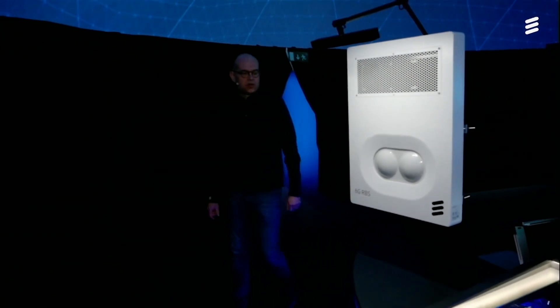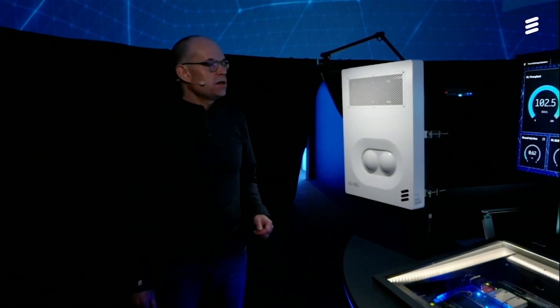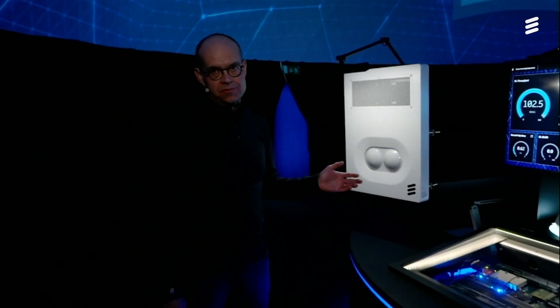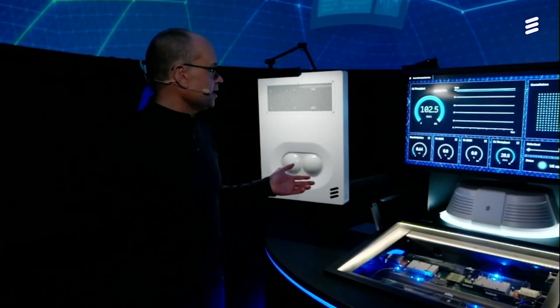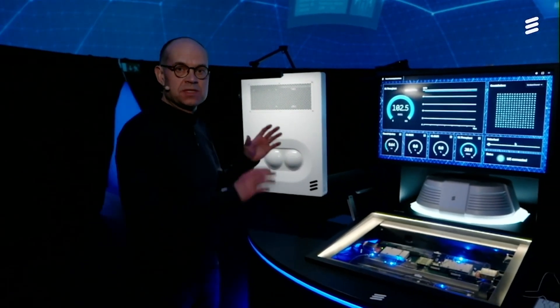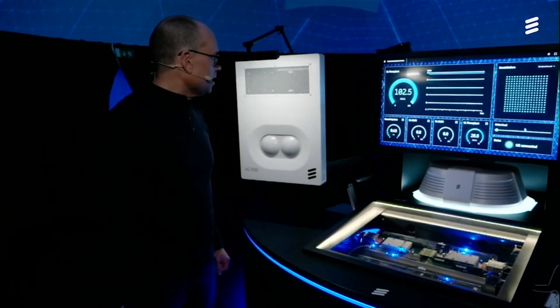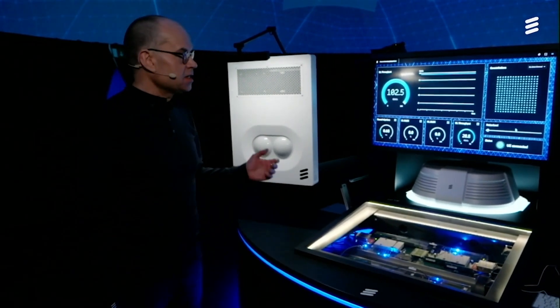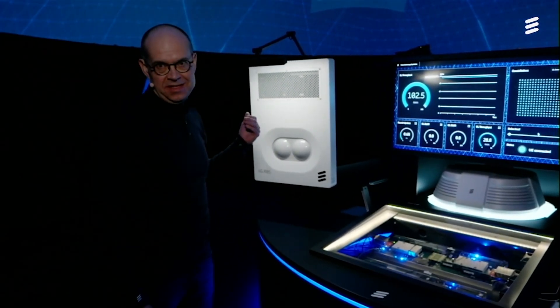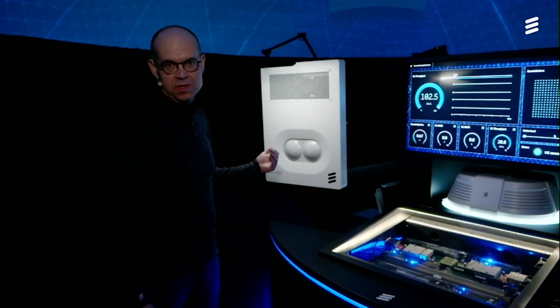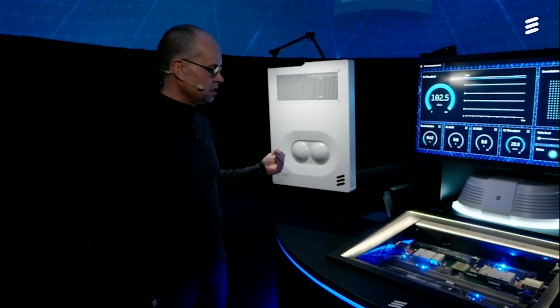So next demo. Here we show peak throughput of 6G, and we are doing this in the sub terahertz band, so high up in spectrum. Here, what we have done is that we are using the same baseband stack as we showed in the previous demo, but here we actually have a real radio.